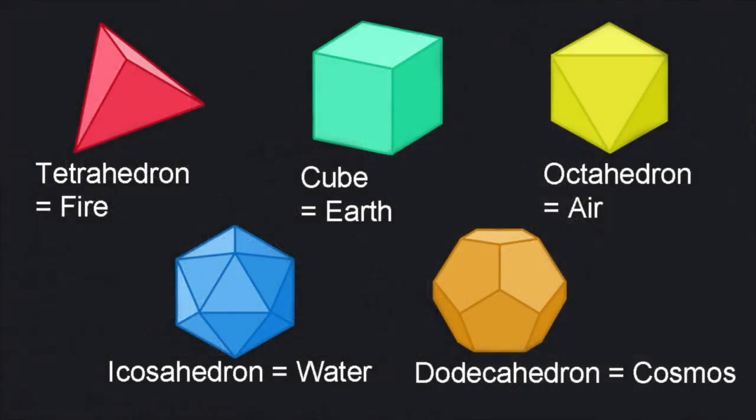Air with the octahedron, fire with the tetrahedron, and water with the icosahedron. A fifth element, quintessence, which was believed to make up the universe beyond the earth, was linked with the dodecahedron.